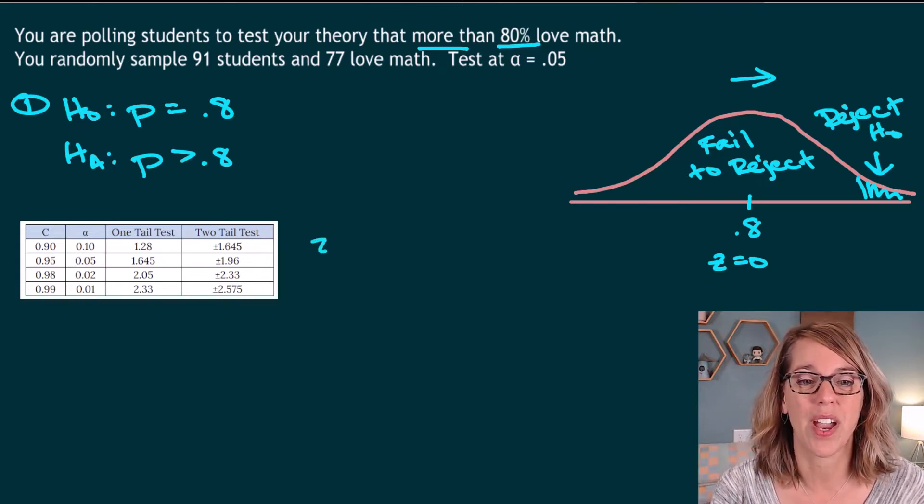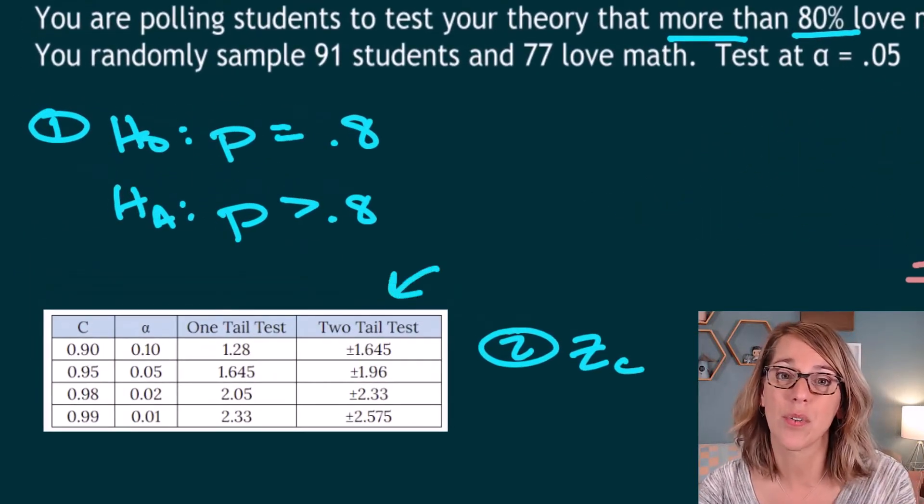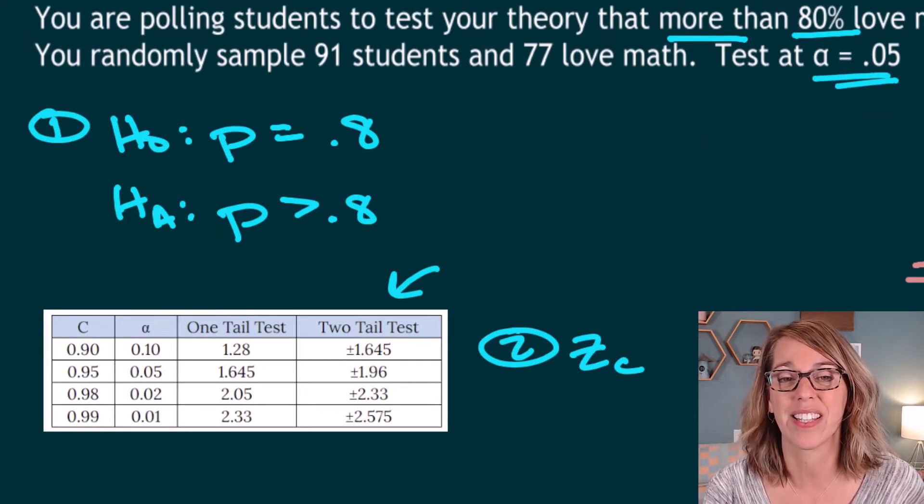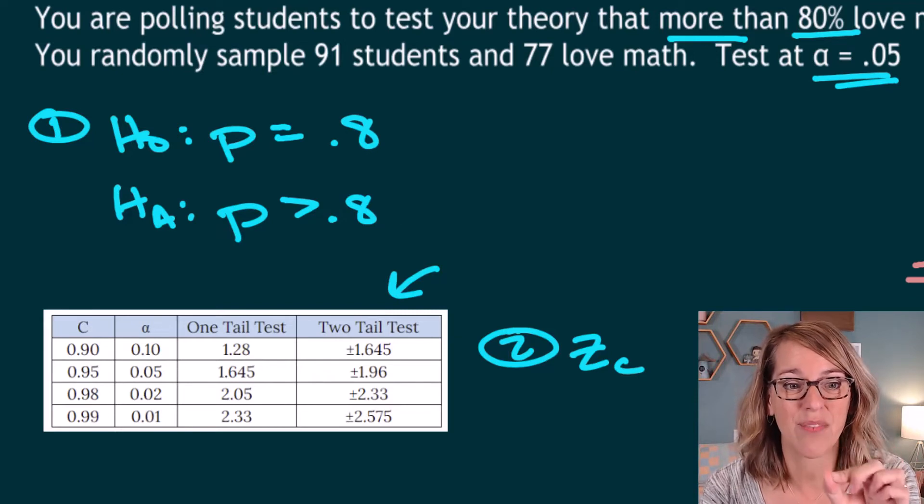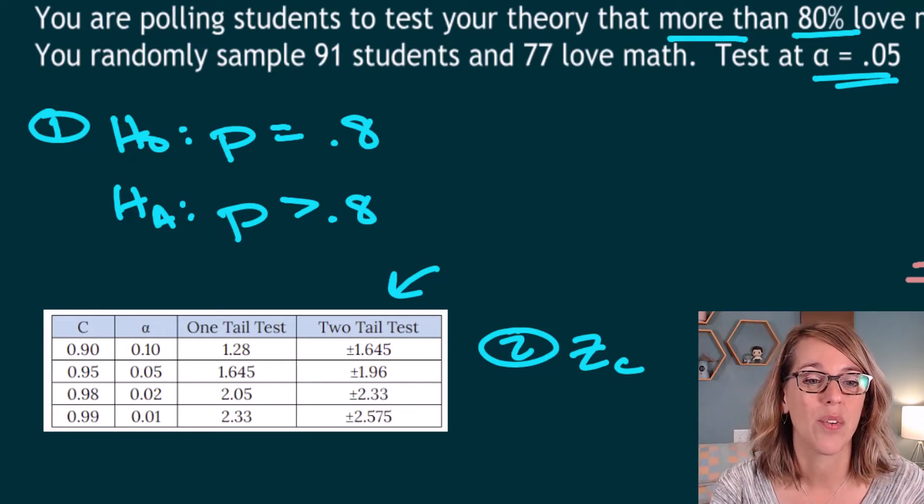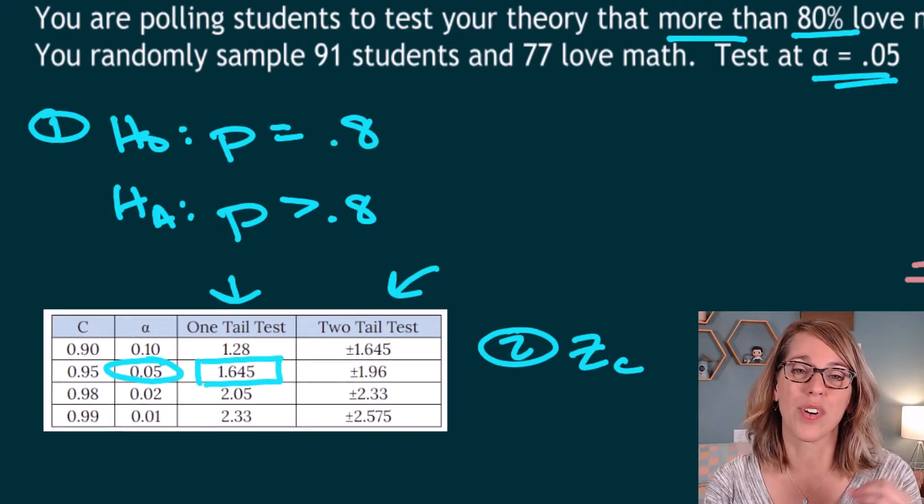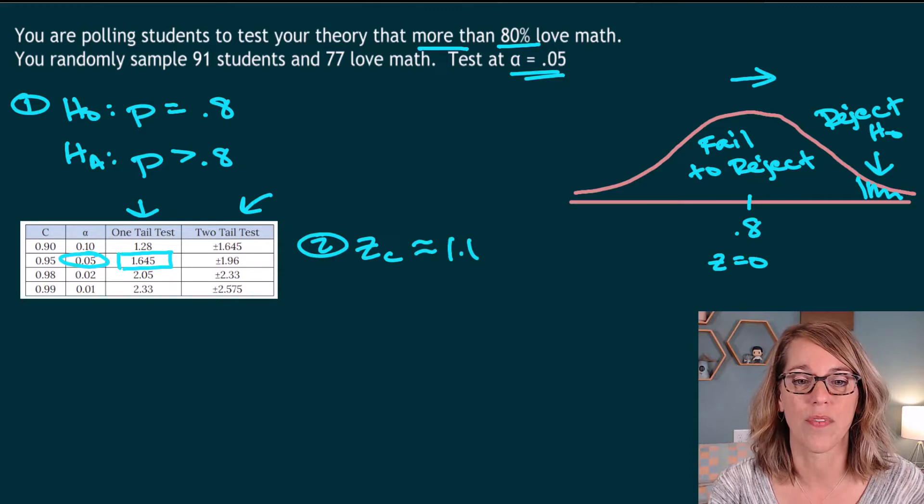So for step number two, I need that critical Z score. Now I've got a table over here that gives me critical Z scores for common significance levels. We were asked to test this at a significance level or an area in the tail of 0.05. We have a one tail test and we've got alpha equal 0.05. So that gives me a significance Z score, a critical Z score of 1.645.